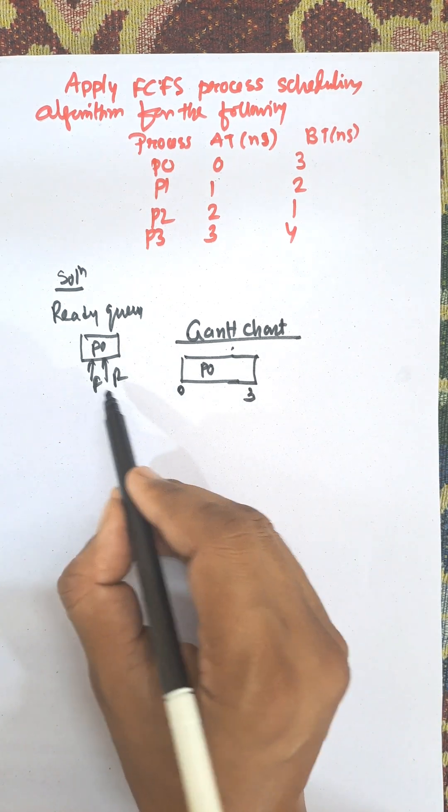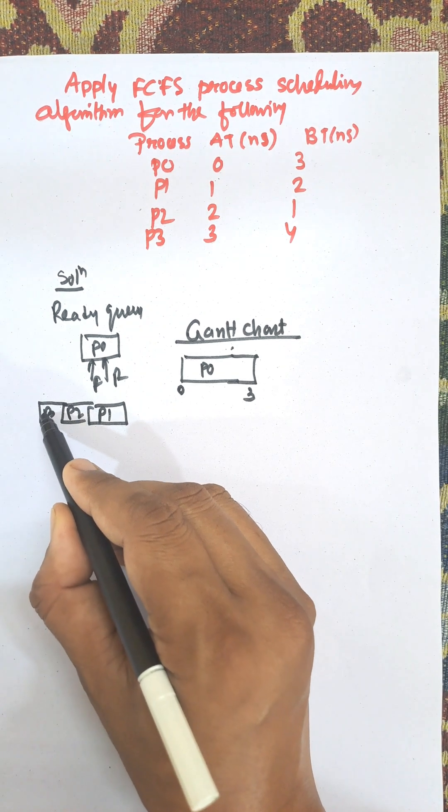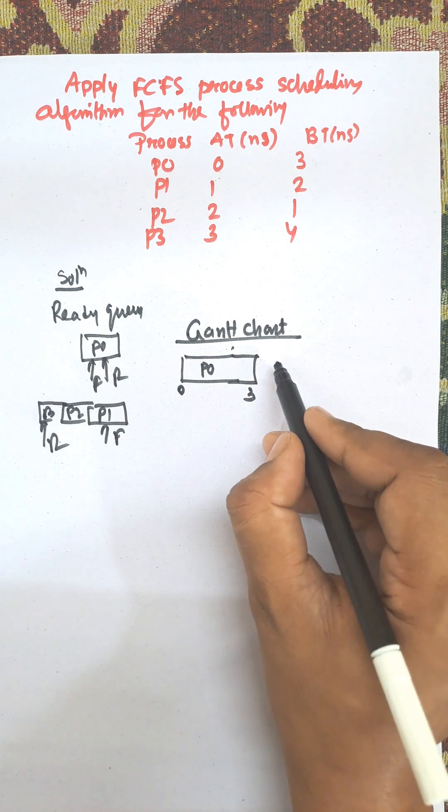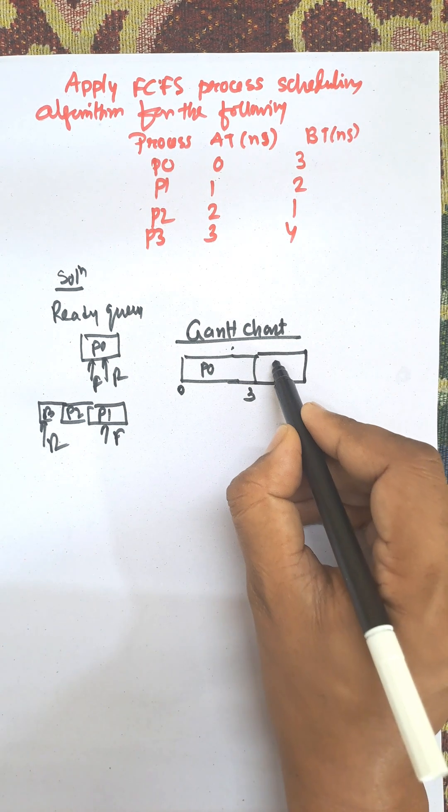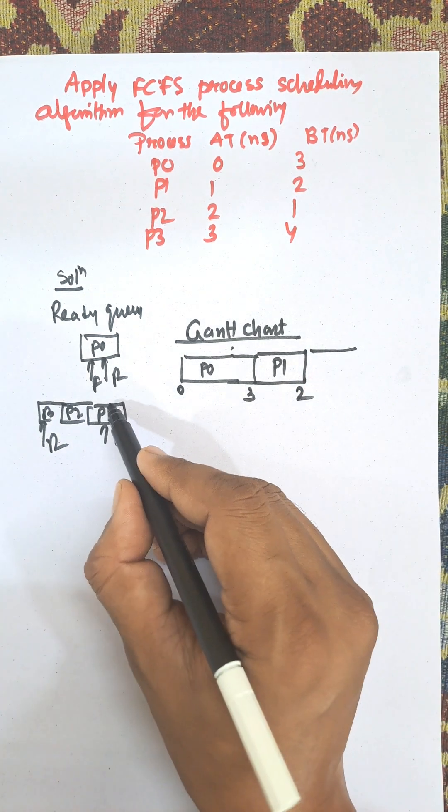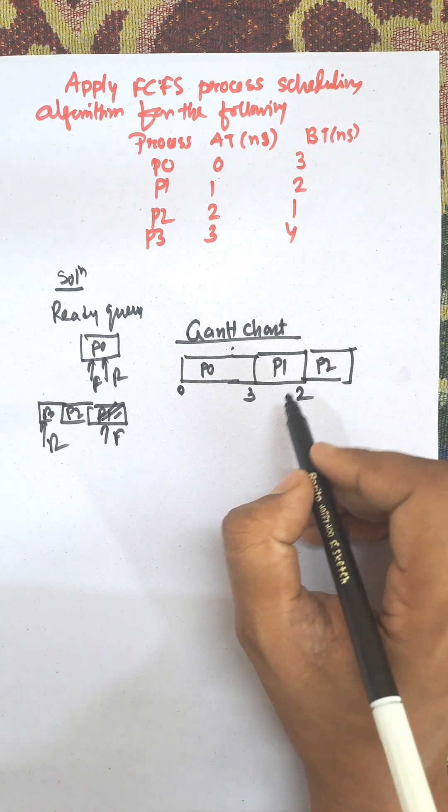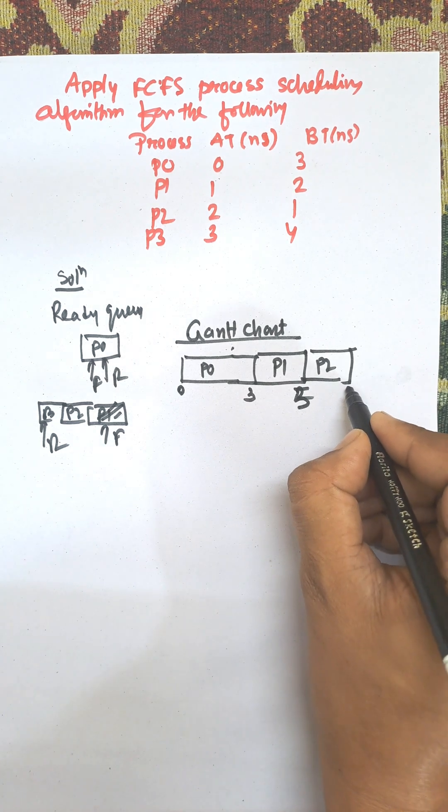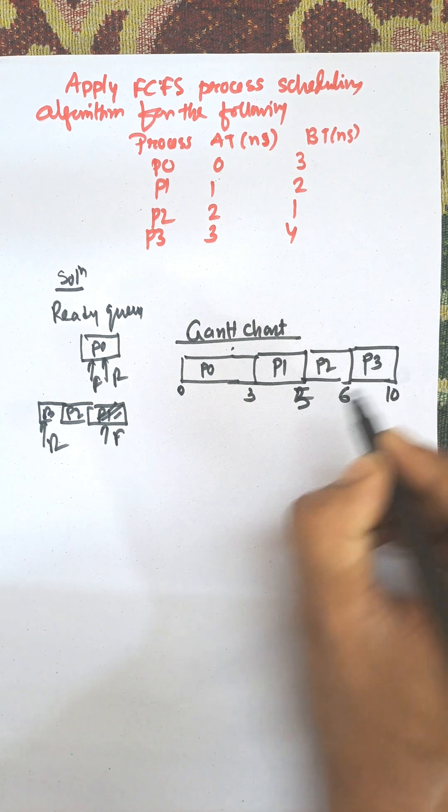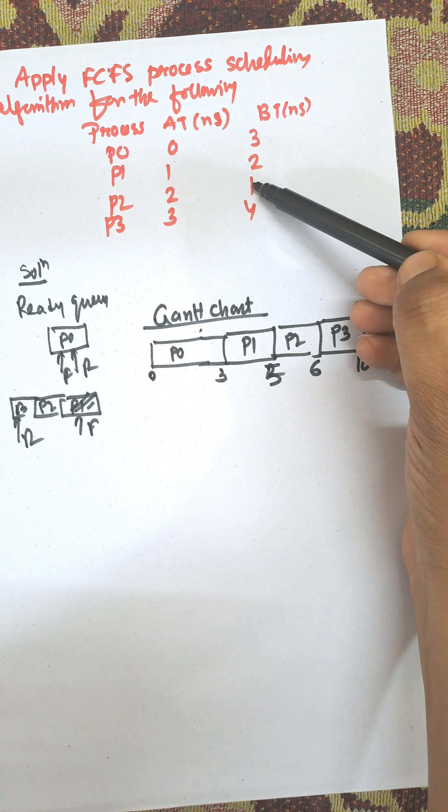Now during this period P0, P1, P2, P3 all have arrived. P1, P2, P3 are in the queue - this is the front and this is the rear. Next process is P1. P1 will complete execution at 3 plus 2 equals 5. Next, when P1 completes, P2 will be selected: 5 plus 1 equals 6. Next, P3 is the last process: 6 plus 4 equals 10.